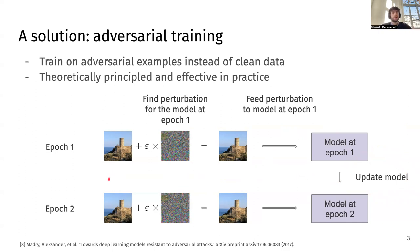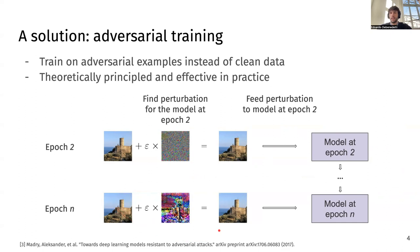We then repeat this process — generating new adversarial examples at each epoch — until the training has converged and we reach the final trained model. This is theoretically principled and effective in practice, and indeed most defenses developed after adversarial training are still based on this principle of training on adversarial examples.